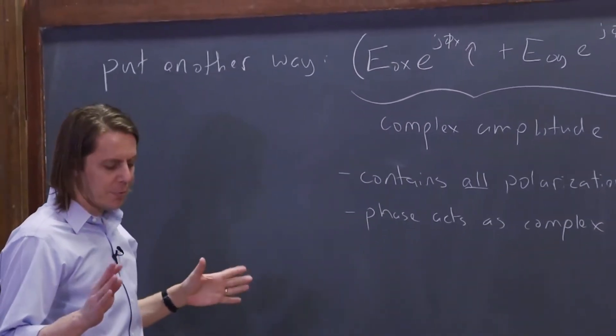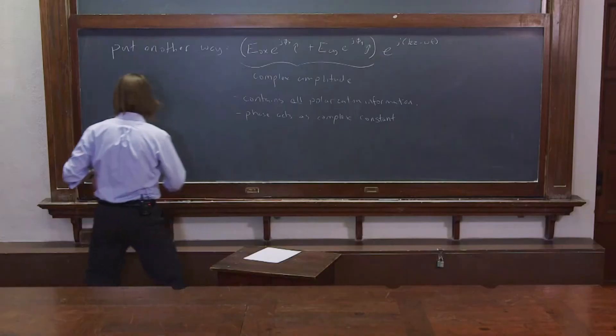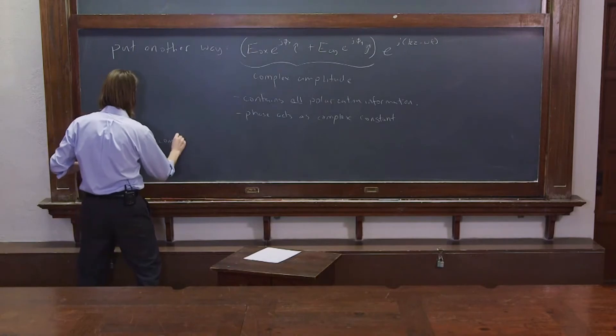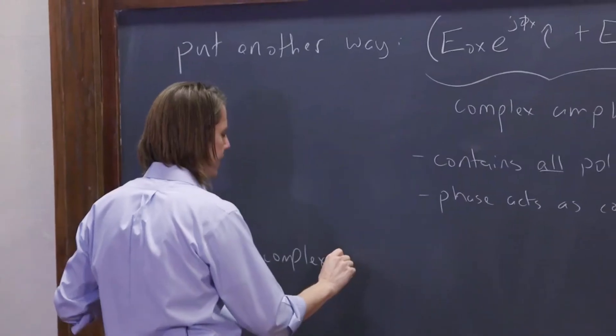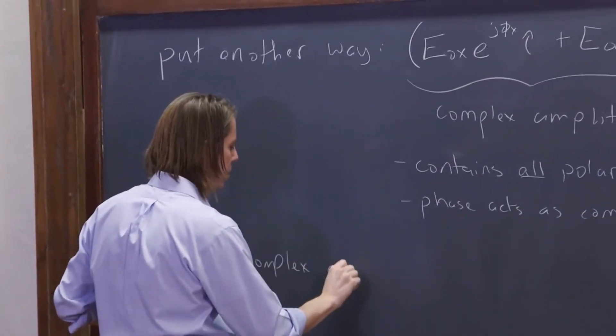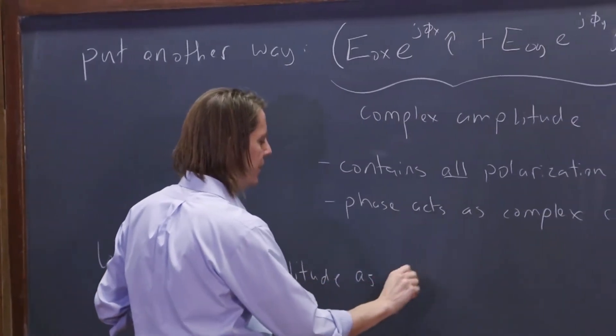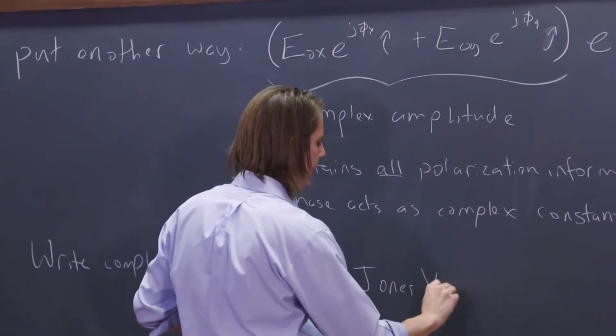So now, we have a formalism called the Jones calculus. So let's write the complex amplitude that contains all the information as a Jones vector.